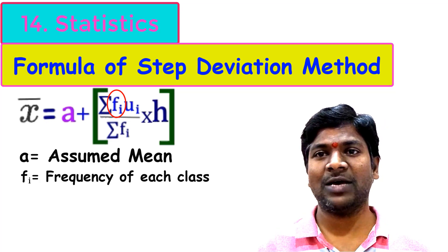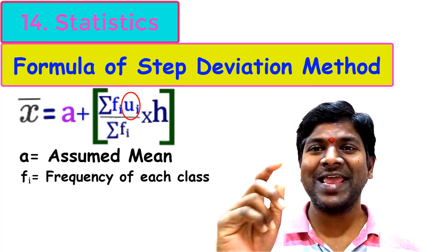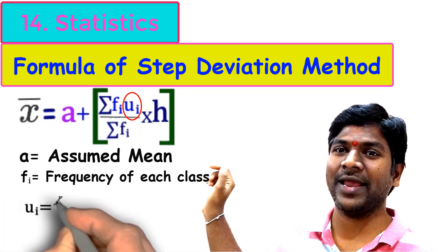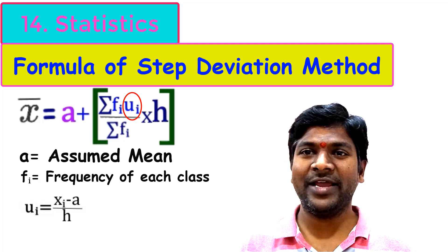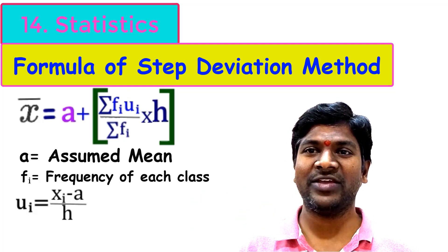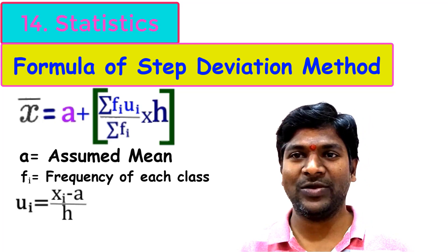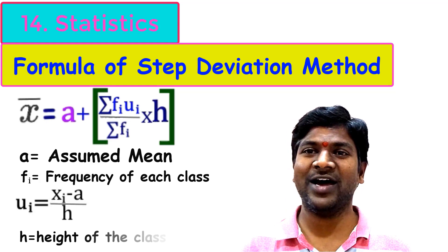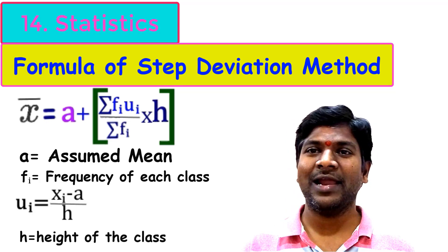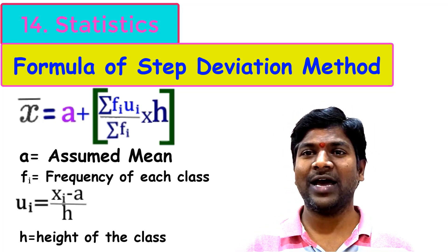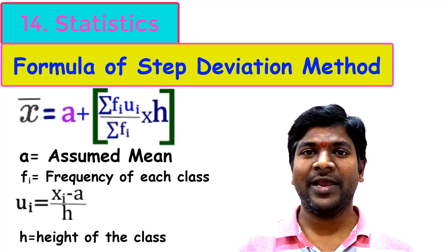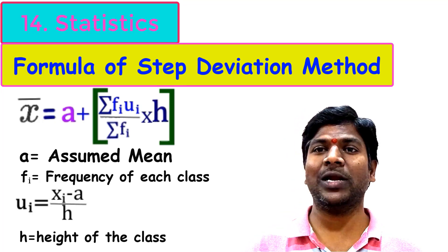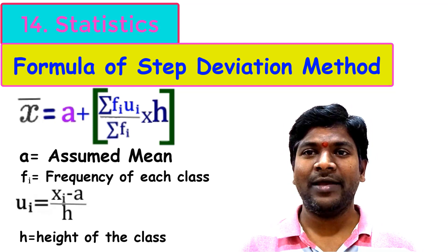'uᵢ' is defined as (xᵢ − a) / h. Here, xᵢ − a is the deviation of each mid value from the assumed mean. 'h' is the height or length of the classes, which is the difference between the lower or upper limits of two consecutive classes.